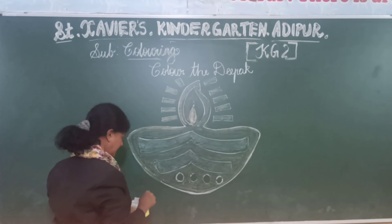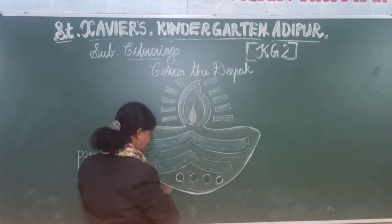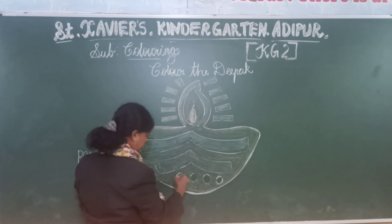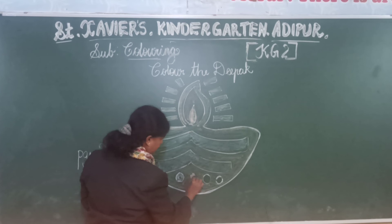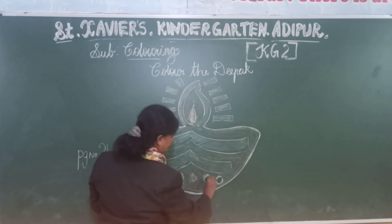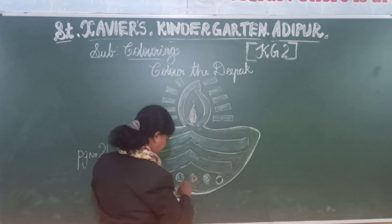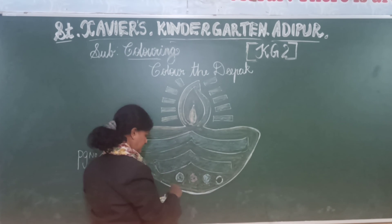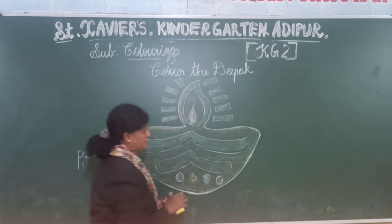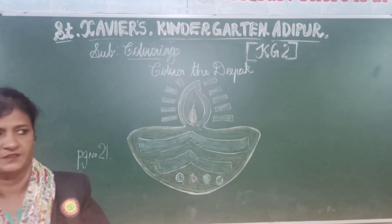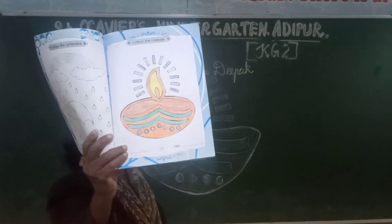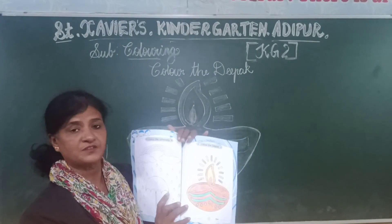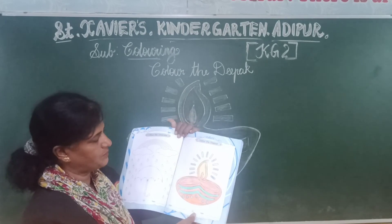Then colour it nicely. You can colour whatever you want. Use your ideas and make it colourful and beautiful. Look at this — it is done. You can colour like this. Use crayons and you can use a dark colour also to make it look beautiful.